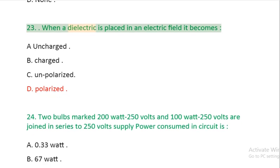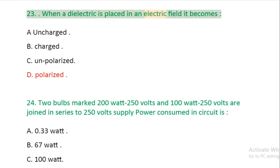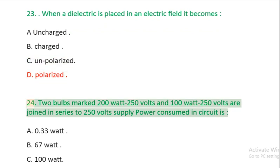Question 23: When an electric dipole is placed in an electric field it becomes: A: uncharged. B: charged. C: unpolarized. D: polarized.